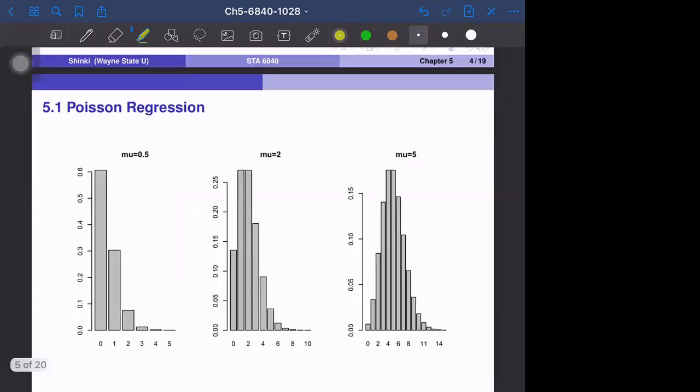These are the probability histograms. When mu equals 0.5, the average is 0.5, but this is heavy-tailed. Sometimes even three, four, or five, but most of the time zero with more than 60% probability and one with 30% probability. When mu equals 2, the center is two and the mode is also two and one, with some small probability to have very large values of y. When mu equals 5, the mode is five and four. It becomes more symmetric, but still has the tail part.